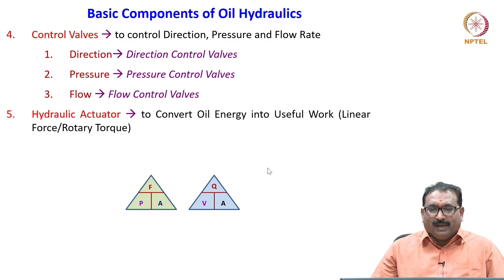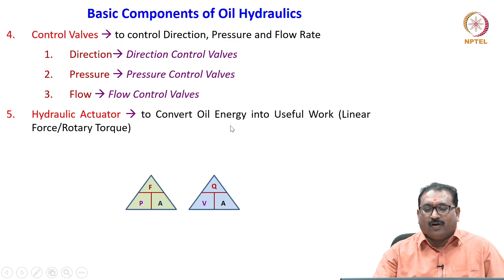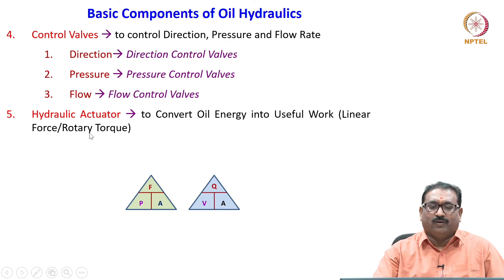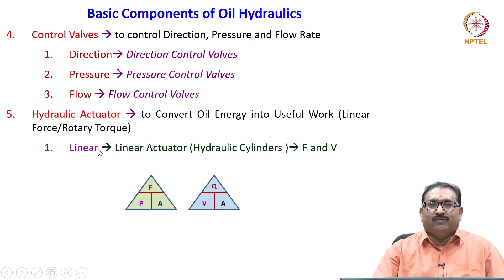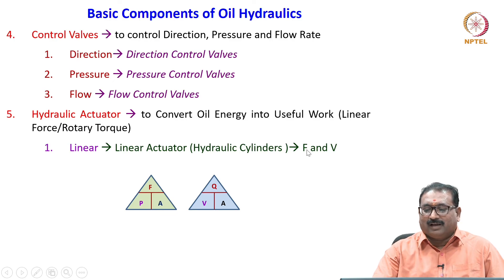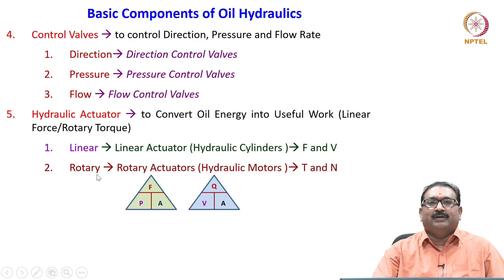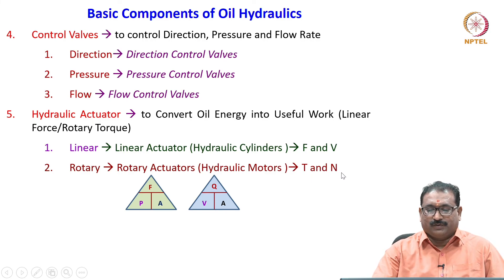The fifth main component of the hydraulic system is the hydraulic actuator, which converts oil energy into useful work — either linear force or rotary torque. For linear motion control, we use linear actuators, generally hydraulic cylinders, where the important parameters are force F and velocity v. The second category is the rotary actuator, which produces torque and speed — these are known as hydraulic motors.